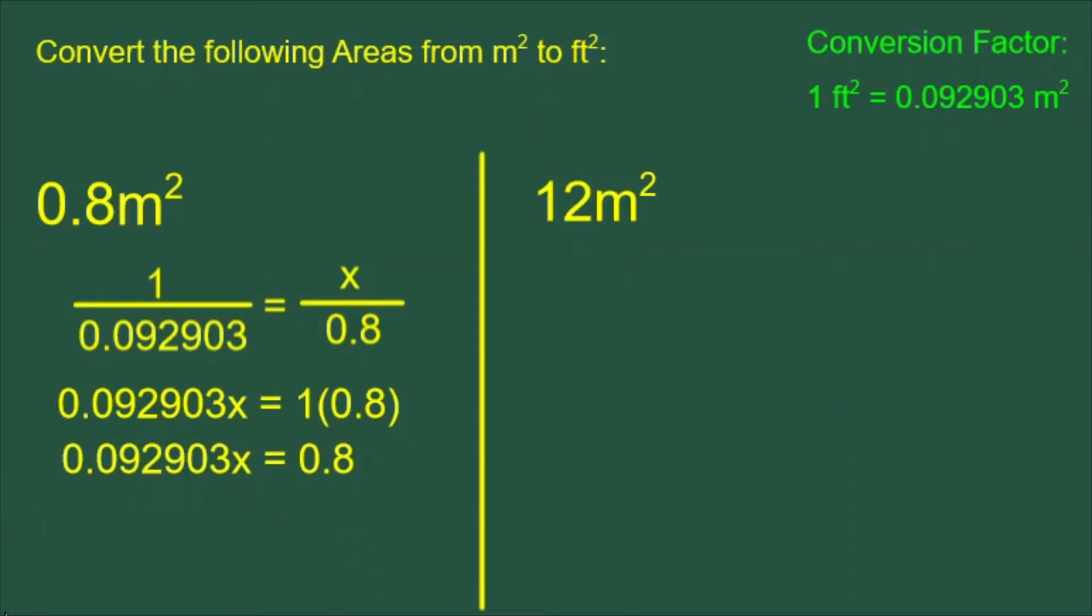We will do this by dividing both sides by 0.092903. When we do that, these cancel. Our x is isolated and is equal to 8.6 feet squared. This value is rounded.